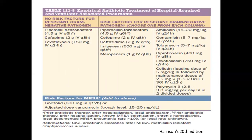If you suspect the patient has developed ventilator-associated pneumonia, you should promptly start empirical antibiotic therapy. Before starting, check for risk factors for resistant gram-negative pathogens. If no risk factor, give piperacillin-tazobactam, cefepime, or levofloxacin. If risk factors for resistant gram-negative pathogens exist, give two groups: first, piperacillin-tazobactam, cefepime, ceftazidime, imipenem, or meropenem; second, amikacin, ciprofloxacin, levofloxacin, colistin, or polymyxin B. If there is risk for MRSA, add linezolid or vancomycin plus clindamycin.